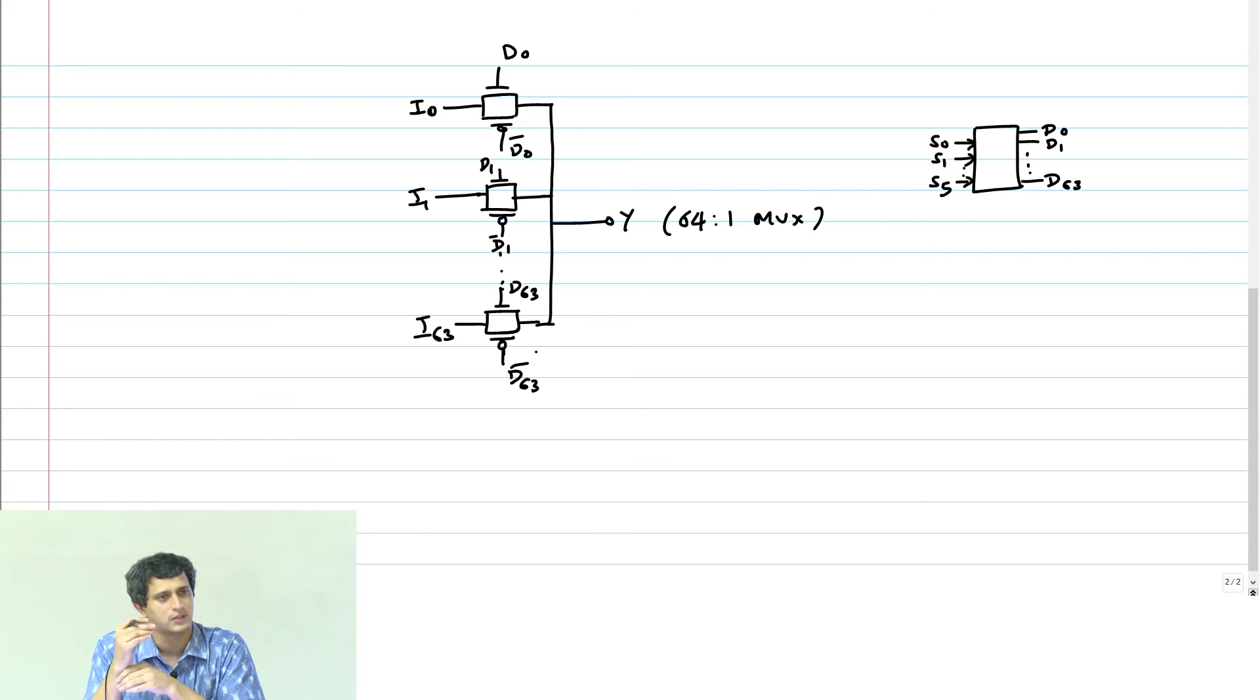The only problem with this style of circuit is, if I ask you what is the drive strength of this multiplexer, what is the answer? If I have an inverter, unit inverter, then I say the drive strength is 1, 1x. If I have a unit NAND gate, the drive strength is 1 again. Now if I ask you what is the drive strength of this transmission gate based multiplexer? What is it?